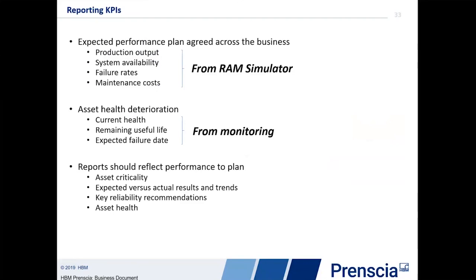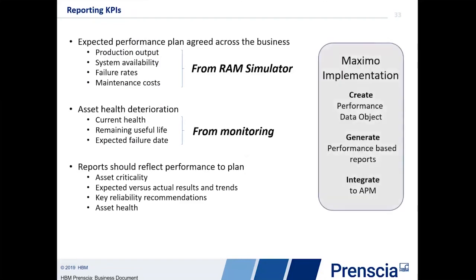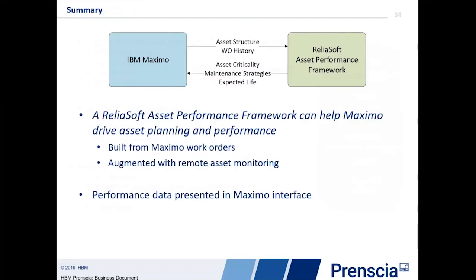Once we have this information, our reports can reflect this performance-based information. As we continue to monitor the system and continue to get failures, we can compare what's actually happening to these overall plans. If there are deviations from the plan — say failures are higher than planned — we have to go back and understand why. If failures are less than the overall plan, there's an opportunity for maintenance people and spare parts teams to make adjustments. All of this information is passed back to Maximo and put into performance-based reports. We're actually working to develop interfaces with the Maximo Asset Health Insights system as we speak.